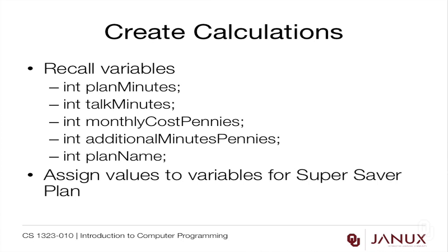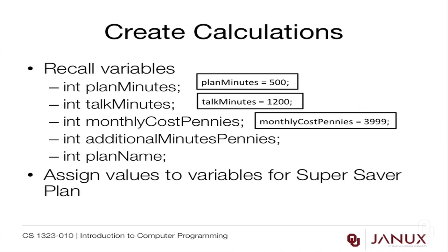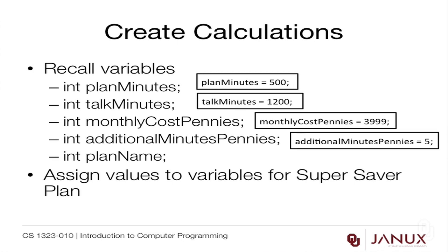What does matter is that we pick one and stick with it. You may have thought the variable names were unnecessarily long and complicated, but now that you're looking at this a little bit later, isn't it nice to have variable names that actually mean something? That's why we picked the long variable names to start with. Here are the initializations: plan_minutes is 500, talk_minutes is 1200, and monthly_cost_pennies is 3999.